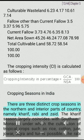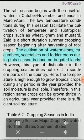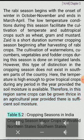Cropping seasons in India. There are three distinct crop seasons in the northern and interior parts of the country: Kharif, Rabi, and Zaid. The Kharif season largely coincides with the southwest monsoon, under which cultivation of tropical crops such as rice, cotton, jute, jowar/bajra, and tur is possible. The Rabi season begins with the onset of winter in October-November and ends in March-April. The low temperature conditions during this season facilitate the cultivation of temperate and subtropical crops such as wheat, gram, and mustard. Zaid is a short-duration summer cropping season beginning after harvesting of Rabi crops. Cultivation of watermelons, cucumbers, vegetables, and fodder crops during this season is done on irrigated lands. However, this distinction in the cropping season does not exist in southern parts of the country. Here, the temperature is high enough to grow tropical crops during any period in the year provided soil moisture is available. Therefore, in this region the same crops can be grown thrice in an agricultural year provided there is sufficient soil moisture.